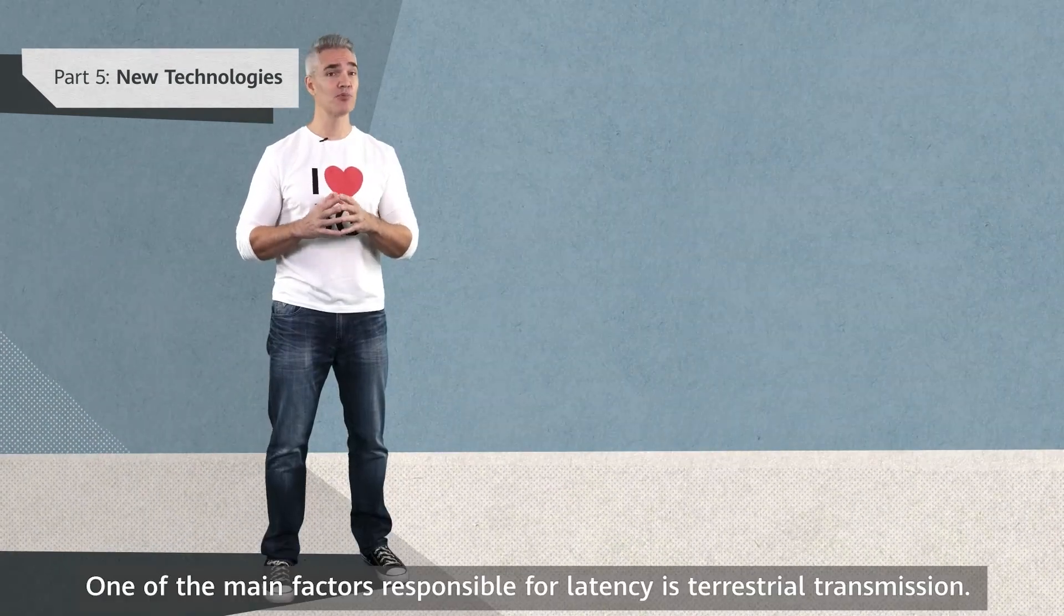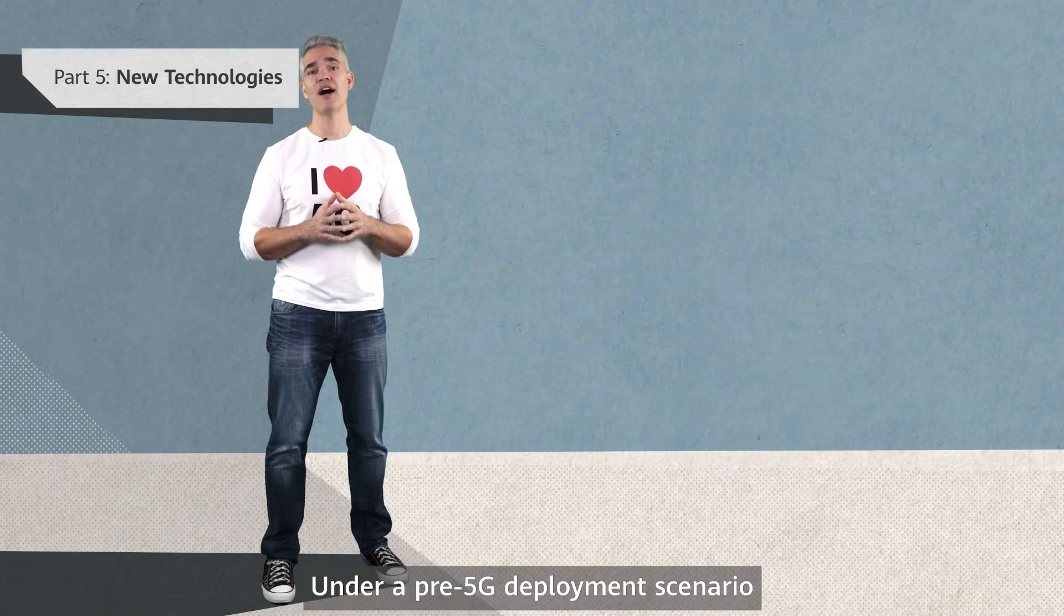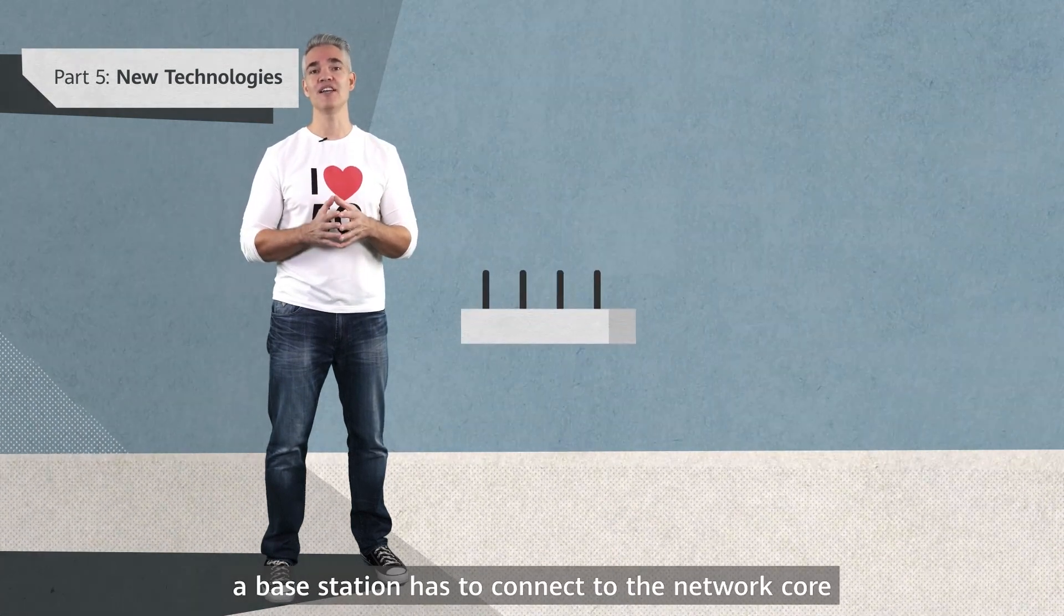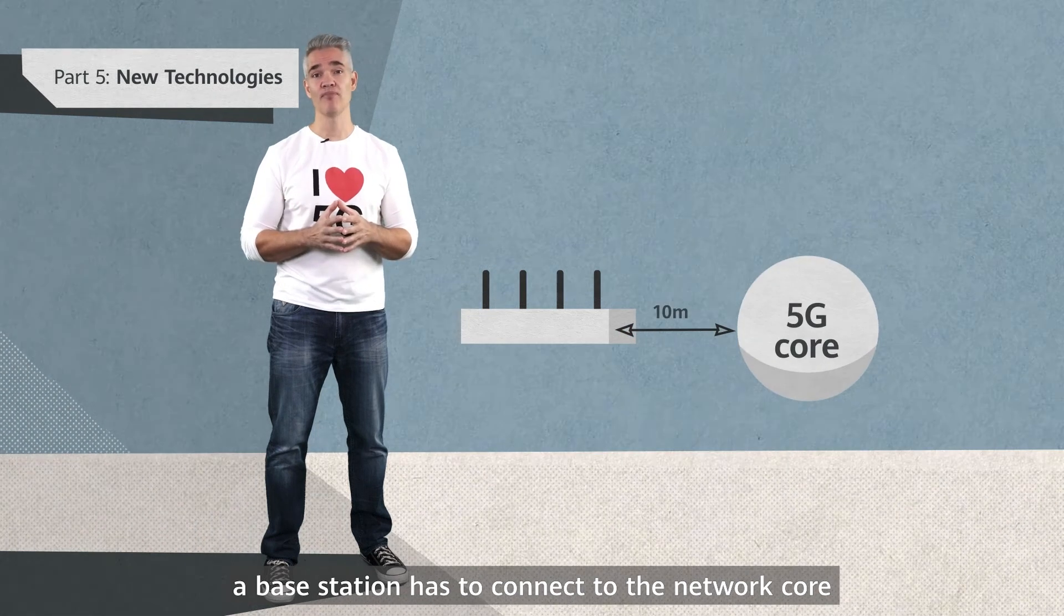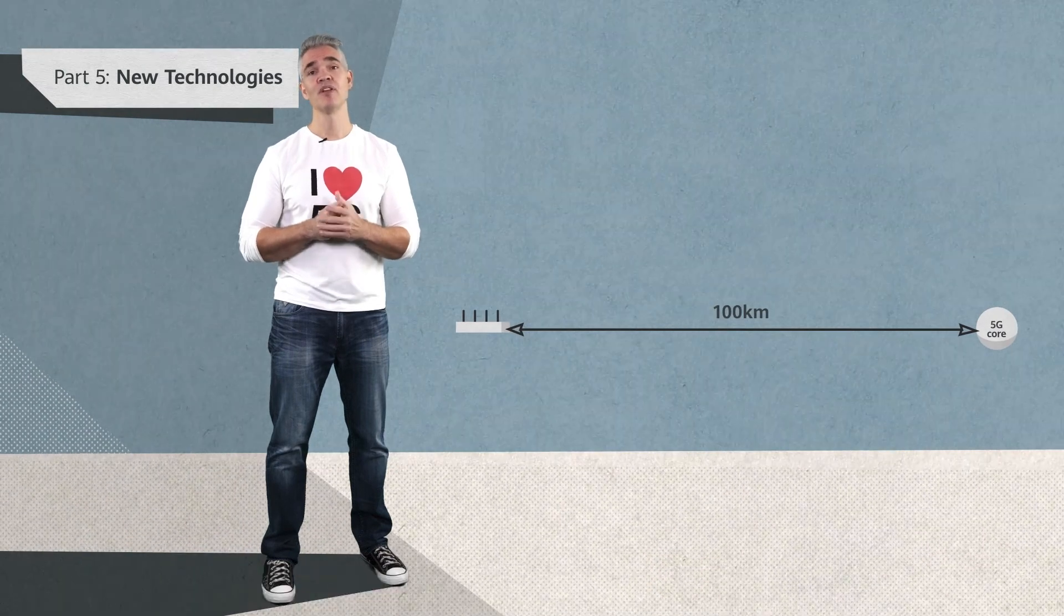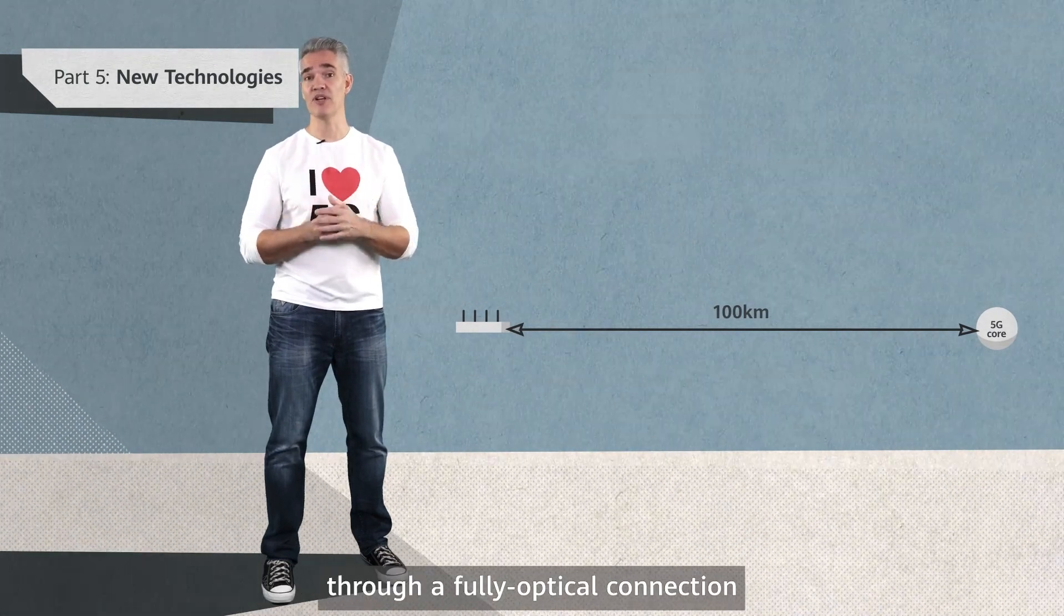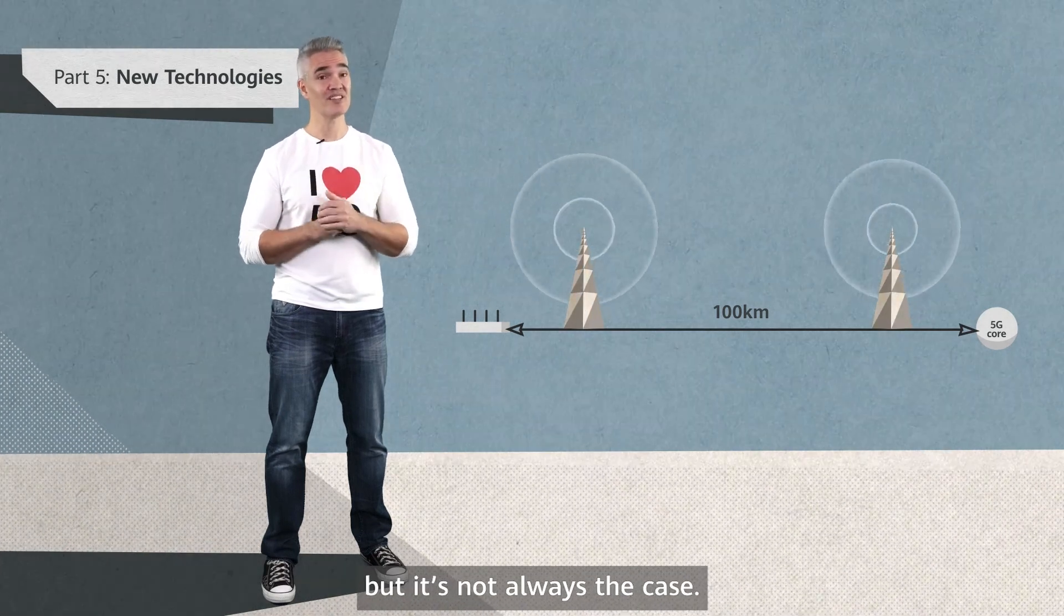One of the main factors responsible for latency is terrestrial transmission. Under a pre-5G deployment scenario, a base station has to connect to the network core, which in some situations could be located hundreds of kilometers away. This is fine if the base station connects to the core network through a fully optical connection, but that's not always the case.